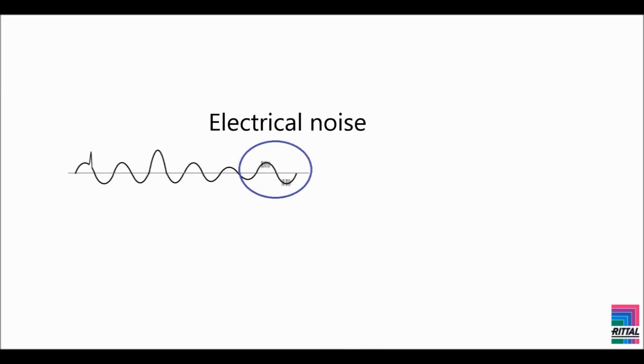Electrical noise: Very high-frequency oscillations superimposed on the supply sine wave. This can be caused by lightning strikes, load switching, cable faults, or nearby radio frequency equipment. Electrical noise can cause data corruption and hanging computers.